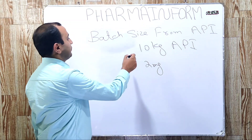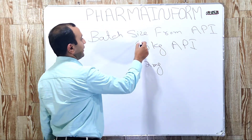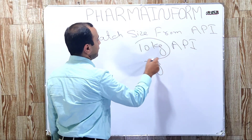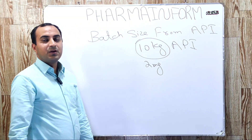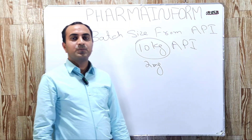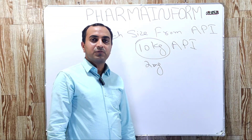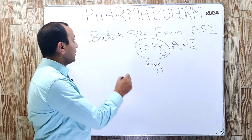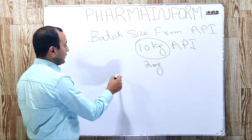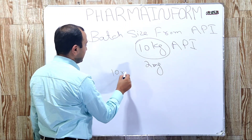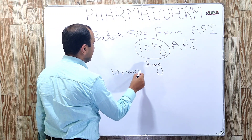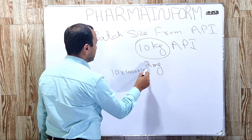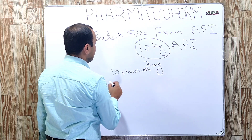So the answer is simple. As you know that we have 10 kilograms — first of all, we will convert kilograms into milligrams. So, 10 × 1000 × 1000.